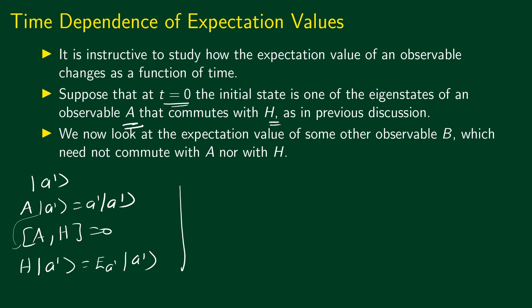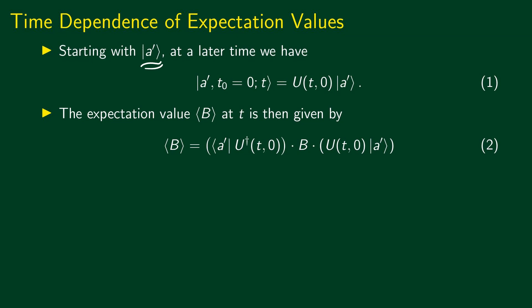Now let us look at the expectation value of some other observable B, which need not commute with A or with H. The commutator of A with B is not equal to zero, and the commutator of H with B is also not equal to zero. In this case, how does the expectation value of B change with time? We take ket A-prime as the initial state. Since ket A-prime is an eigenket of both operator A and the Hamiltonian with eigenvalue E_A-prime, we can proceed.